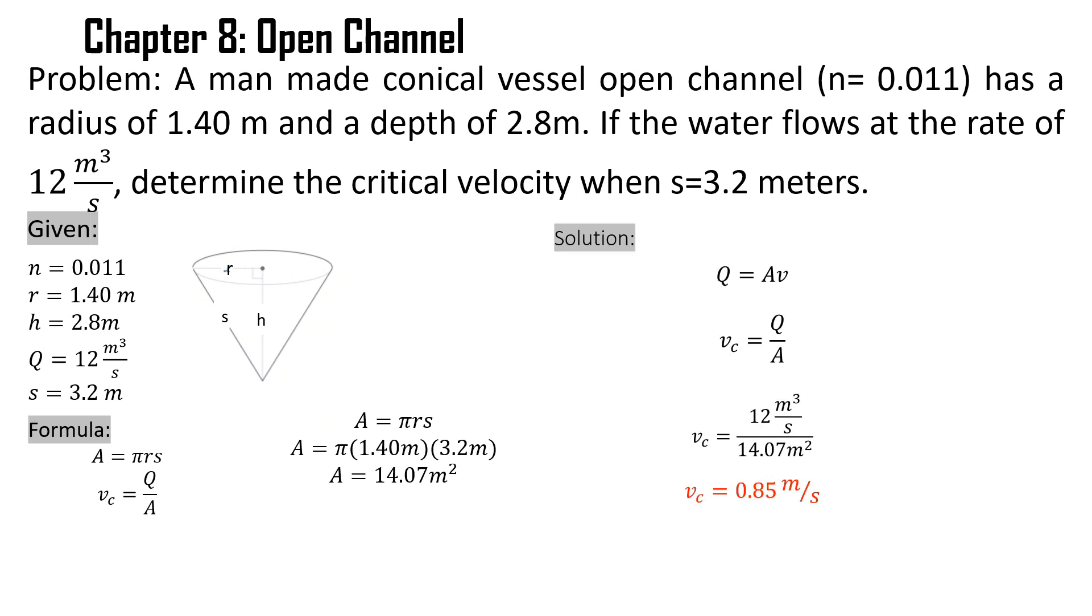Now that we have solved for the value of the area, we can proceed in solving the value for critical velocity since all of the variables are known in the equation. Critical velocity equals discharge over area.